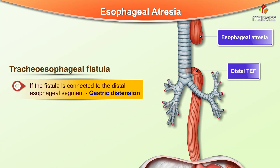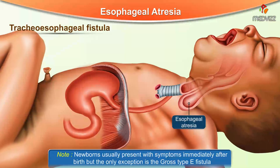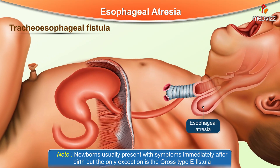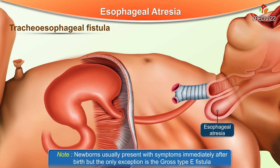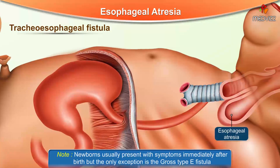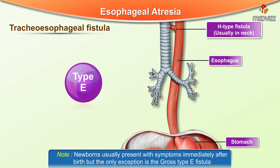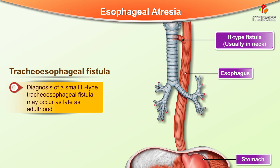If the fistula is connected to the distal esophageal segment, there can be gastric distension. Newborns usually present with symptoms immediately after birth, with the exception of gross type E fistula, where there is minimal or no atresia or obstruction. The diagnosis of a small H-type tracheoesophageal fistula may even occur as late as adulthood in some cases.